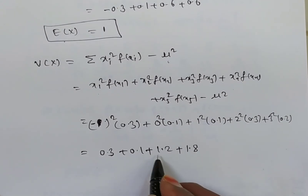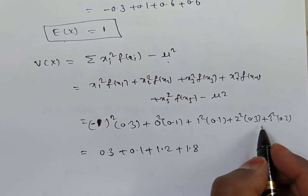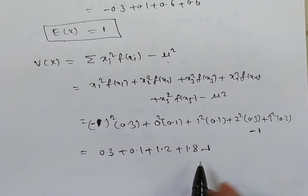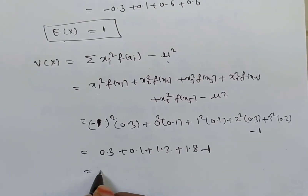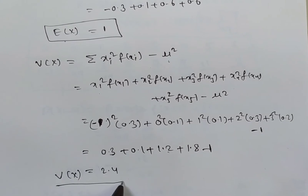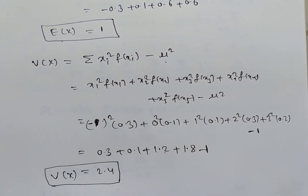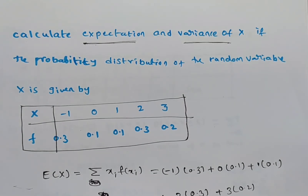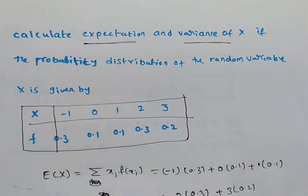Adding all terms gives 3.4, and mu squared is 1 squared equals 1. So 3.4 minus 1 equals 2.4. The variance of the given probability distribution is 2.4, and the expectation is 1. Like this we solve expectation and variance of discrete random variables. Thank you for watching this video.